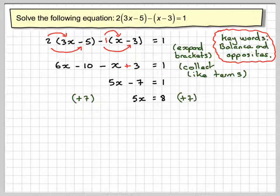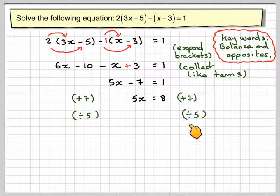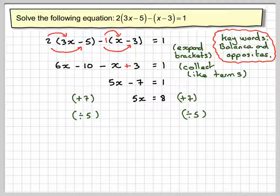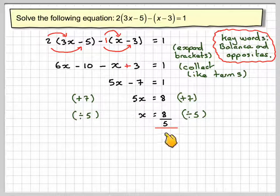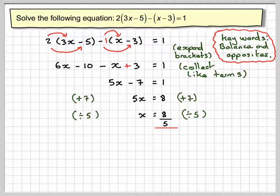And then finally, 5 times x is equal to 8. The opposite of multiplying by 5 is to divide both sides by 5. So 5x divided by 5 is x, and 8 divided by 5 equals 8/5. Remember we do division like a fraction when solving equations, and it's okay to leave the answer as an improper fraction.